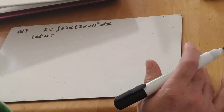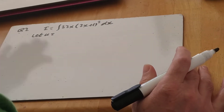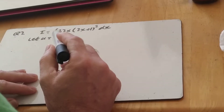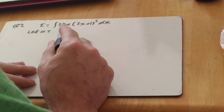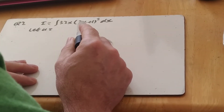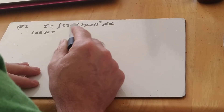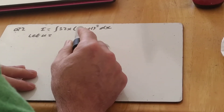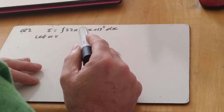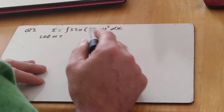Question 1 could all be done by inspection — thinking of something that differentiates to give the answer. This doesn't work for questions 2 and 3, because the function outside the bracket isn't a direct differential of what's inside. You can't just multiply by x; it doesn't work through differentiation — you end up with a product.